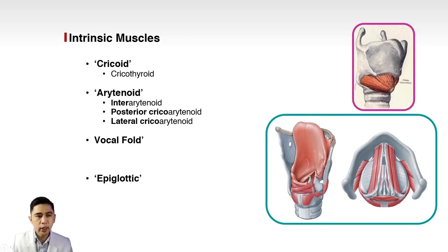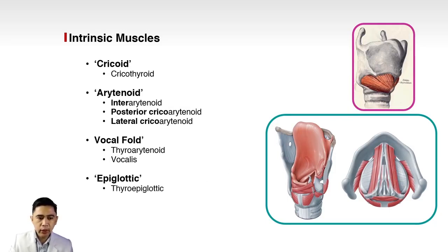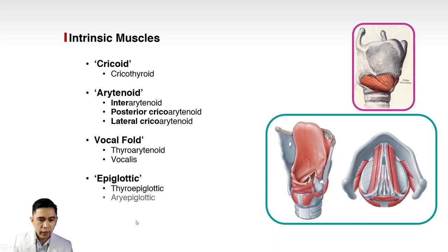The vocal fold group includes the thyroarytenoid and the vocalis. The thyroarytenoid connects the thyroid and the arytenoid. The vocalis muscle is intimately related to the vocal fold itself. The epiglottic group includes the thyroepiglottic muscle, connecting the thyroid to the epiglottis, and the aryepiglottic muscle, connecting the arytenoid to the epiglottis.